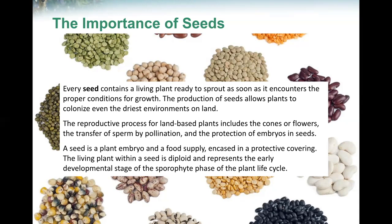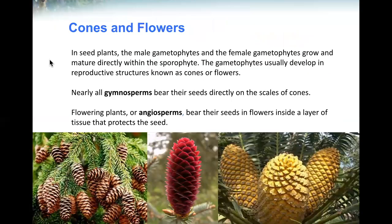The living plant within a seed is diploid and represents the early development stage of the sporophyte phase of the plant life cycle. In seed plants, the male gametophyte and the female gametophytes grow and mature directly within the sporophyte. The gametophytes usually develop in reproductive structures known as cones or flowers.